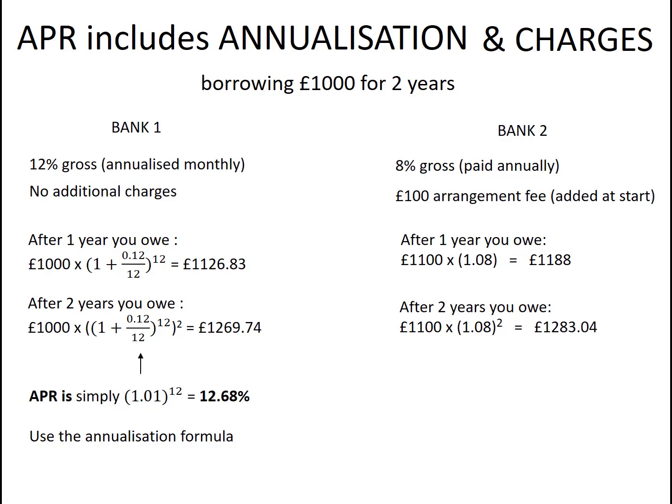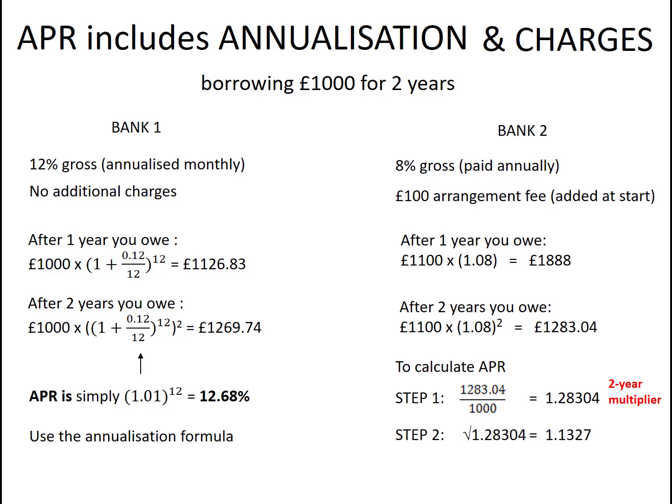This raises the question of how you actually calculate the APR in this situation. First, you have to figure out the multiplier that gets you from the £1,000 you actually borrowed to the £1,283.04 you ended up having to repay. Just do a division sum and you get the two-year multiplier. Because the interest rate is the same over two years, to find the one-year multiplier we simply take the square root, getting a yearly multiplier of 1.1327. So the right-hand deal corresponds to an APR of 13.27% — an effective rate that provides an easy way of comparing different deals. That's why all banks and lending agencies have to show their APRs.